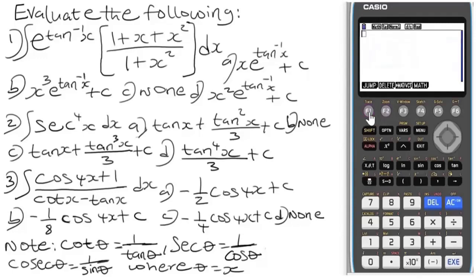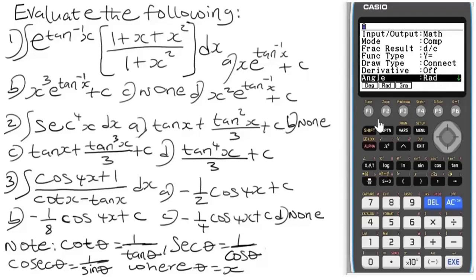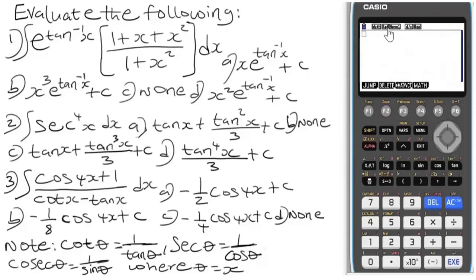Also note that your calculator has to be in Radian mode — this is very important. If yours is in Degree mode, press Shift then the Menu button and navigate down to Angle. By default my calculator is in Radians. If you need to change from Degree to Radian, press F2. Make sure that it is in Radian mode — very, very important.